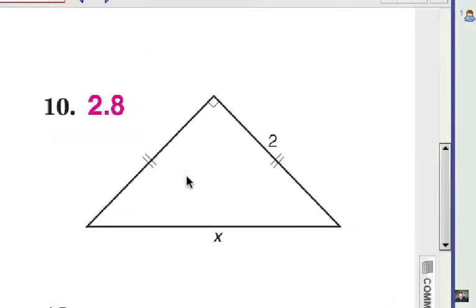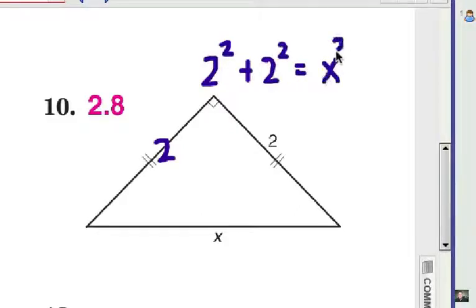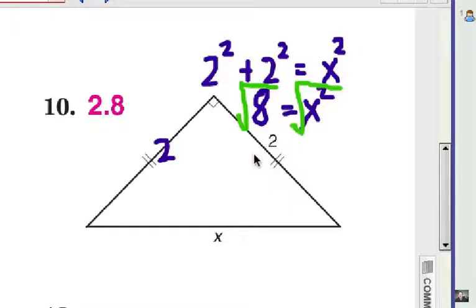Alright, number 10. You see the way the triangle is marked that these legs are congruent to each other. Now one is marked 2, so of course this one also has to be 2. And it's a simple matter of using the Pythagorean theorem this way: 2 squared plus the other leg 2 squared equals X squared. X is going to be the hypotenuse. So we've got 4 plus 4 is 8 equals X squared. We're going to take the square root of each side. And X is going to be the square root of 8 which is about 2.8.